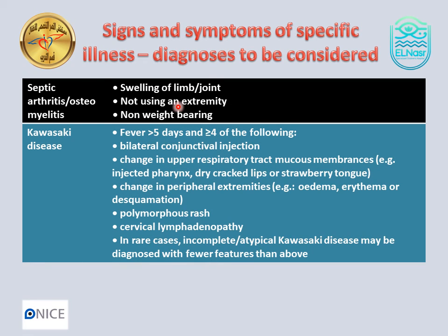For septic arthritis or osteomyelitis: swelling of a limb or joint, with fever. For Kawasaki disease: fever more than 5 days, more than 4 features including conjunctivitis, change in mucous membranes, change in extremities, body rash, cervical lymphadenopathy, and other systemic manifestations.